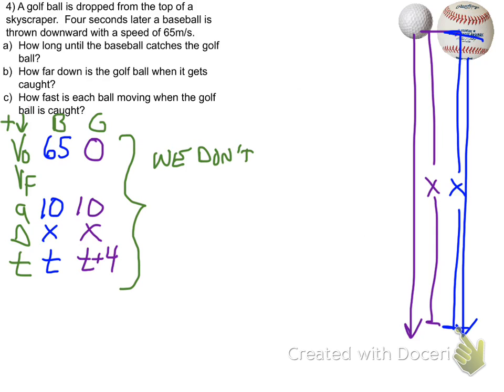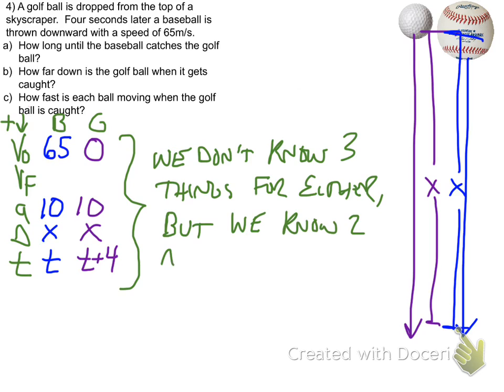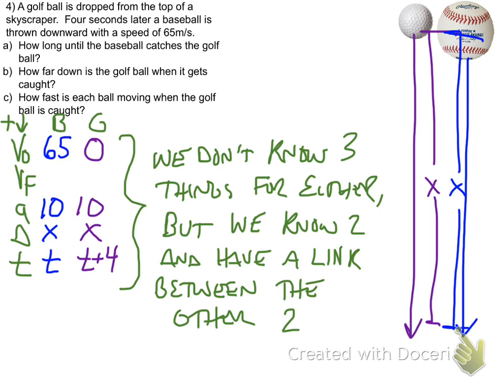So now we're ready to start solving. Except we don't know three things for either one. But we do know two things. And we have a link between the other two. We know that the X's are equal and the time for the baseball. And then we have time plus 4 for the golf ball.